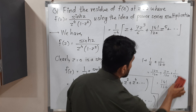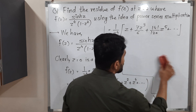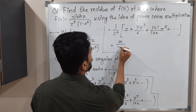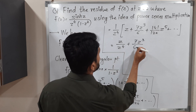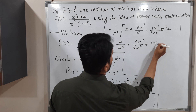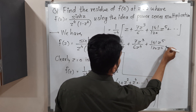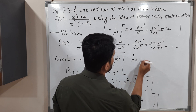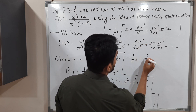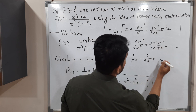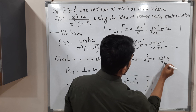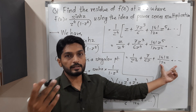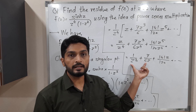Now we multiply each term by 1 over z⁴, giving: z over z⁴ plus 7z³ over 6z⁴ plus 141z⁵ over 120z⁴ and so on. Cancelling terms, we obtain the required Laurent series expansion. The analytic part has z in the numerator; the principal part has z in the denominator. The principal part has only two terms.